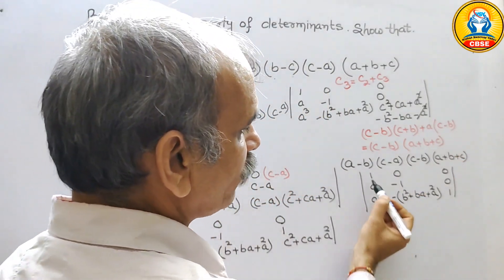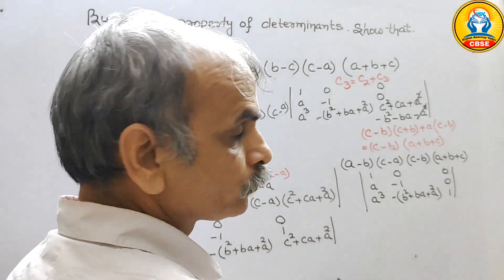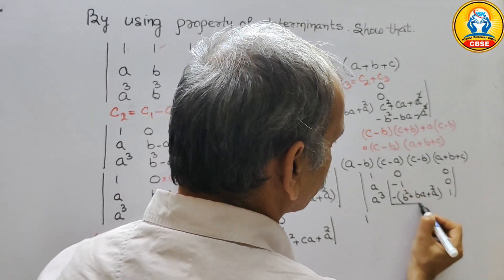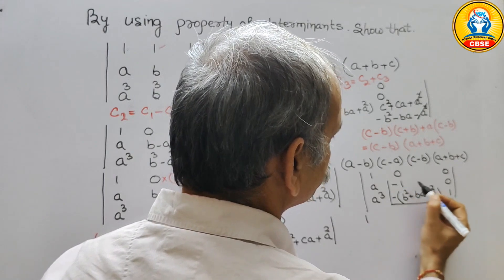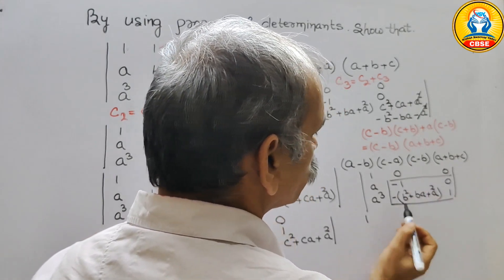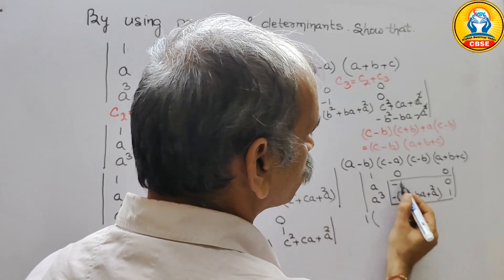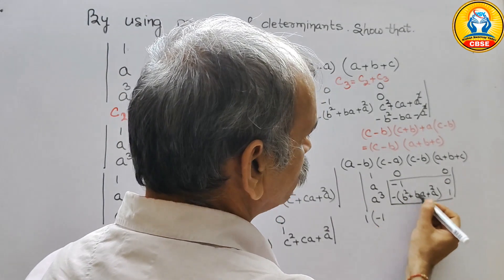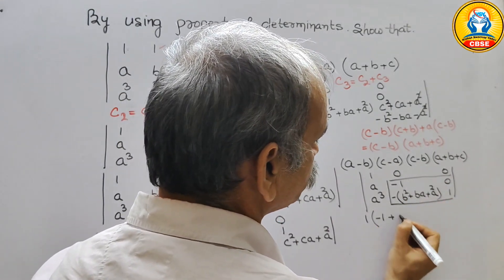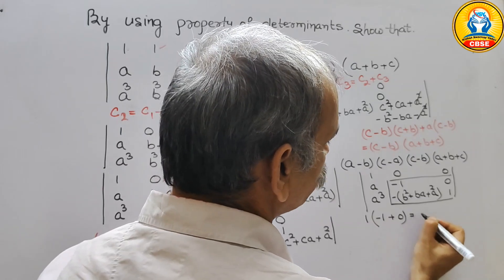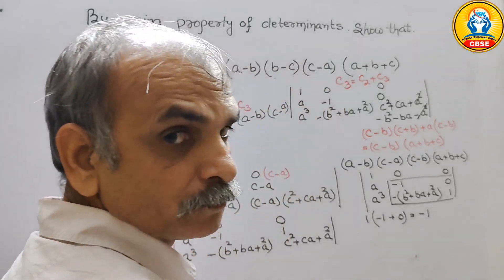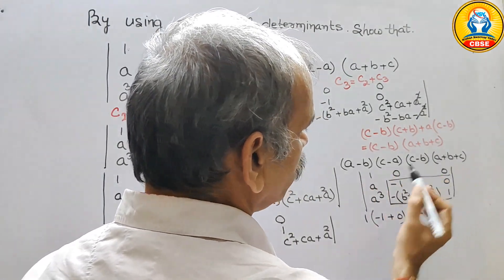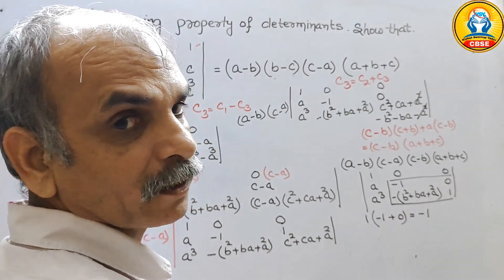We now expand along the third column with the entry 1. Expanding: 1 times the 2×2 minor gives minus 1 times 1, which equals minus 1. So the determinant evaluates to minus 1.